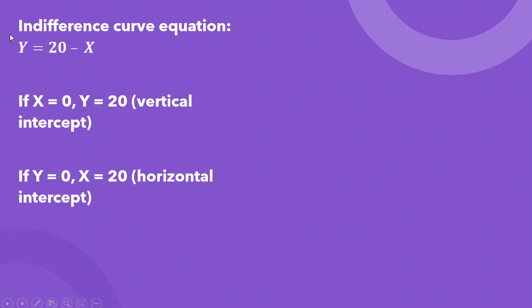And if we set y equal to 0, this time set y equal to 0 and solve for x, x will equal 20, and you have the horizontal intercept for the indifference curve.